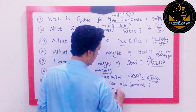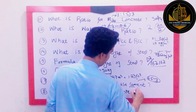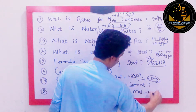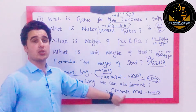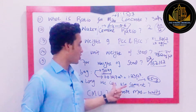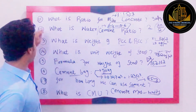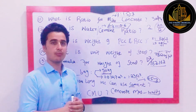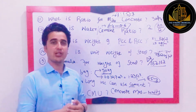Another question: What is CMU? CMU stands for Concrete Masonry Units. In normal language, we call them blocks. So CMU stands for Concrete Masonry Units.